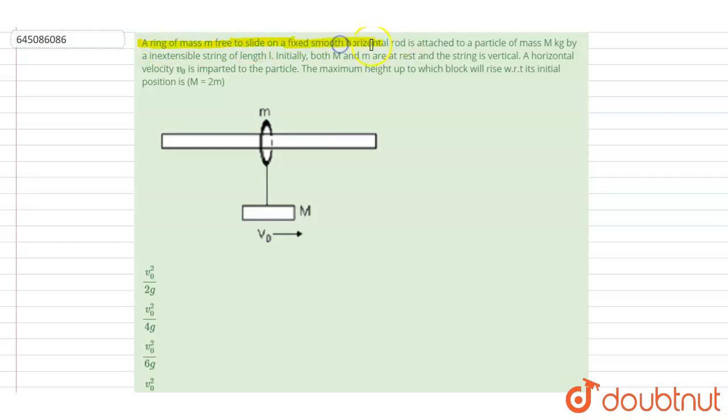m slides on a fixed horizontal surface tied to a mass M by an inextensible string of length l. Initially, mass capital M and small m are at rest and the string was vertical. Now a horizontal velocity v0 is imparted to the particle. Maximum height to which the body will rise from the initial position, capital M